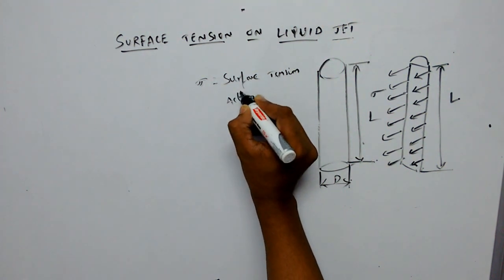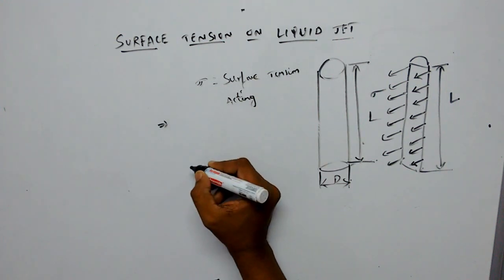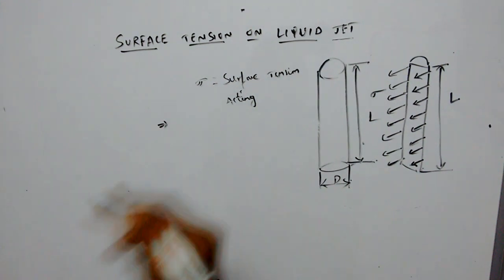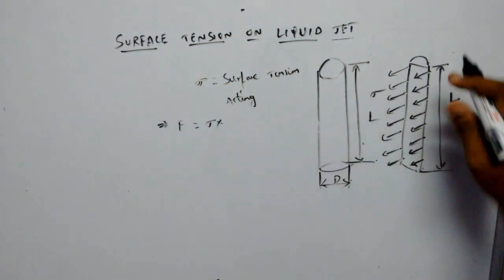By the definition of surface tension, you can write the tensile force developed as F = σ × 2L, since there are two lengths on which surface tension is acting.